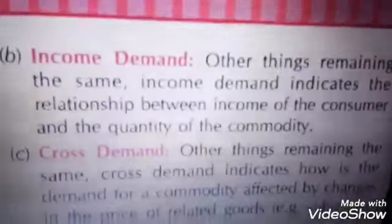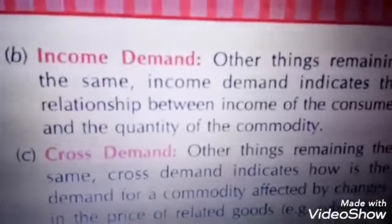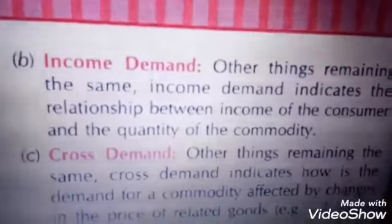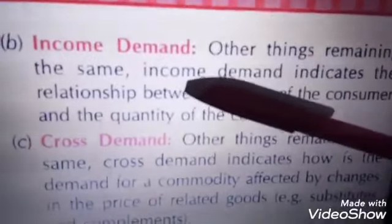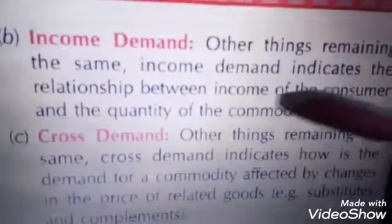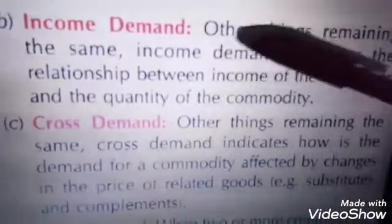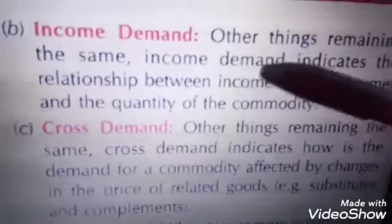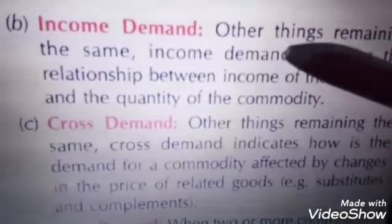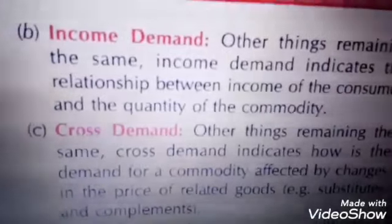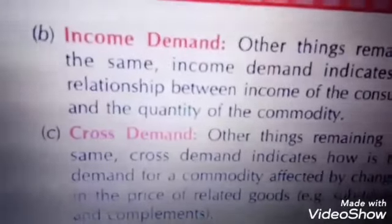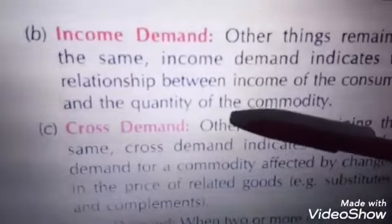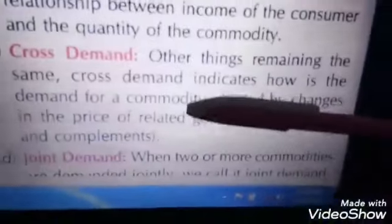Second, income demand, where other things remaining constant, there is a relationship between the income of the consumer and quantity demanded. The relationship is between income and quantity demanded, which basically refers to the consumer. Price demand referred to the relationship between price of the commodity and quantity demanded, while income demand refers to income and quantity demanded. Third is cross demand.